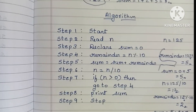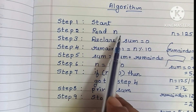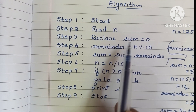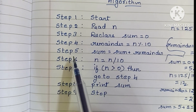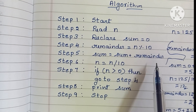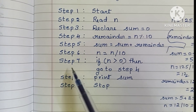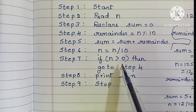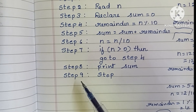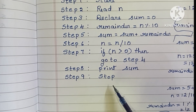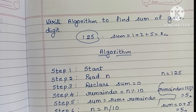To summarize, this is the algorithm to find the sum of given digits: Step 1 — Start. Step 2 — Read N. Step 3 — Declare sum = 0. Step 4 — Remainder = N mod 10. Step 5 — Sum = sum plus remainder. Step 6 — N = N divided by 10. Step 7 — If N greater than 0, go to step 4. Step 8 — Print sum. Step 9 — Stop.